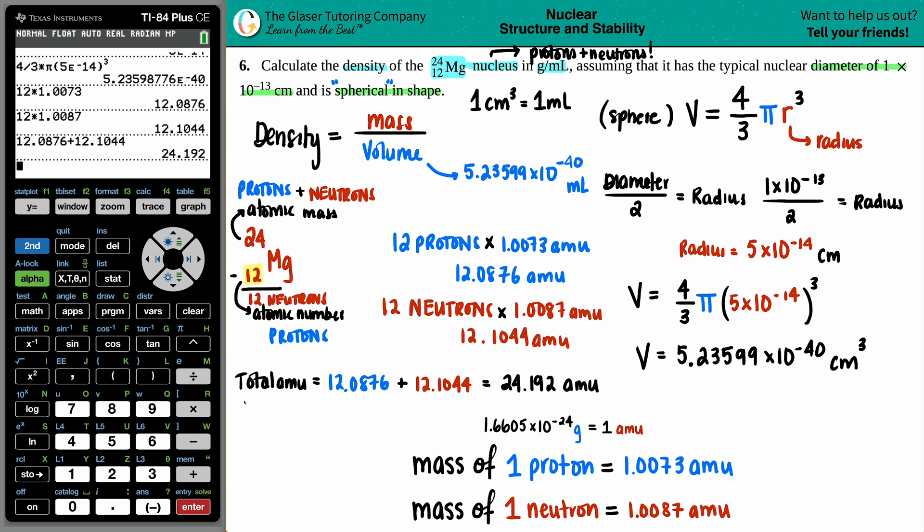It's 1.6605 times 10 to the negative 24th grams equals 1 amu. So if we want to, we can just set up a quick dimensional analysis, 24.192 amu, times by that ratio. We don't want amu anymore, so always place your units on the opposite side. Grams are going to go on top in this case, and the conversion is 1 amu, so that goes on the bottom, equals 1.6605 times 10 to the negative 24th. Cancel out amu, and now we're going to find out how many grams we got.